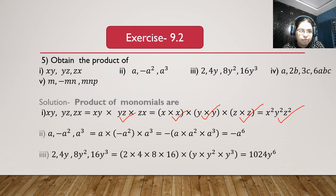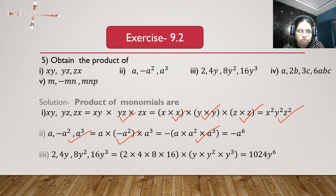Second bit: a, minus a square and a cube. a multiplied with minus a square multiplied with a cube gives minus 1 times a times a square times a cube, which is a to the power 1 plus 2 plus 3. 1 plus 2 is 3, 3 plus 3 is 6. So we get minus a to the power 6.